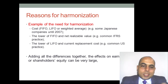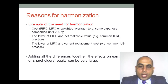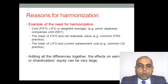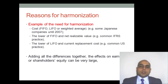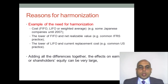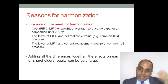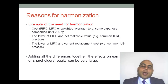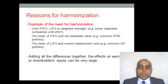The lower of last-in first-out and current replacement cost is common US practice. Suppose we have a company located in the US — they use the lower of last-in first-out to evaluate their inventory — and the same company has an affiliated company located in Japan.